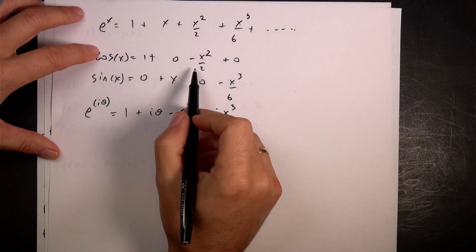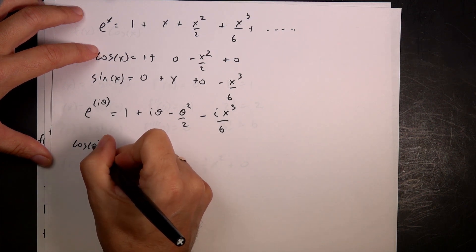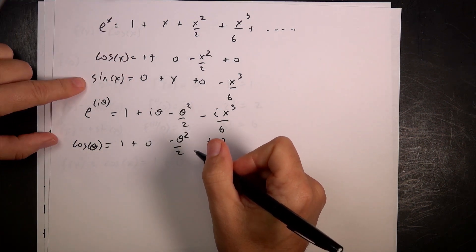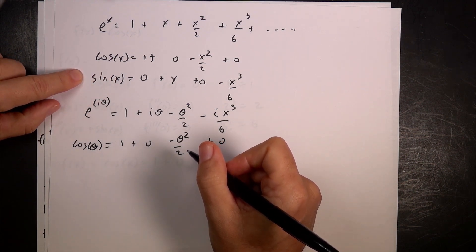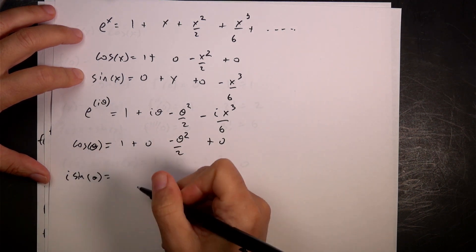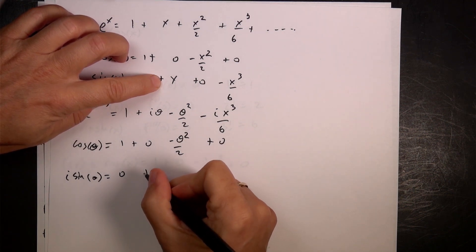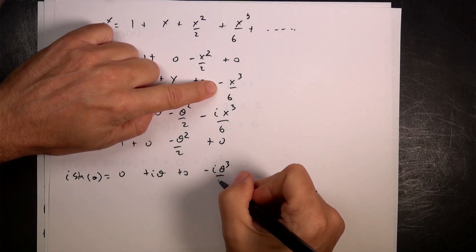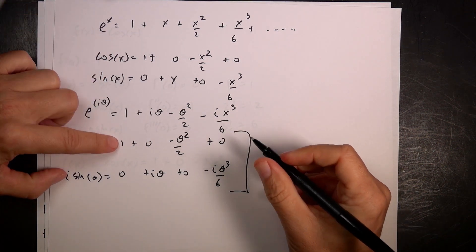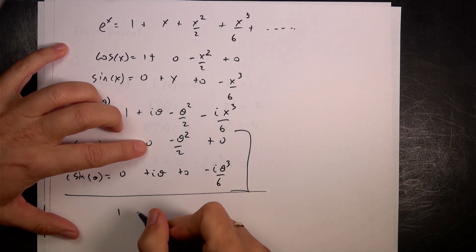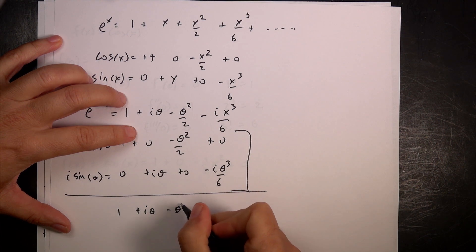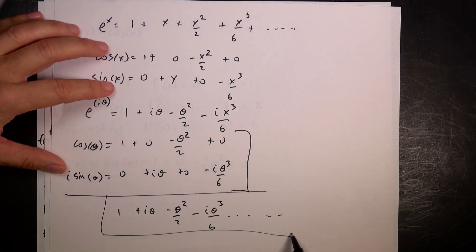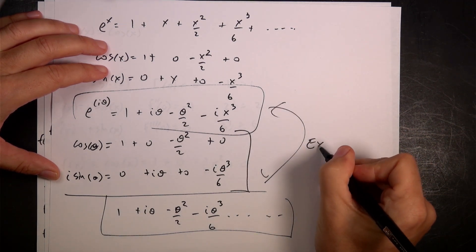And cosine theta — I just replace x with theta — is one plus zero minus theta squared over two plus zero. And i times sine theta — replacing x with theta and multiplying by i — gives zero plus i·theta plus zero minus i·theta cubed over six. So if I add cosine theta and i·sine theta together, I get one plus i·theta minus theta squared over two minus i·theta cubed over six — and these terms keep going forever. You'll notice that this is identical to the Taylor expansion of e to the i·theta.